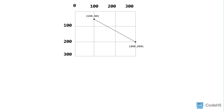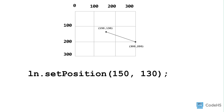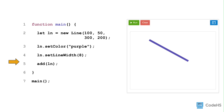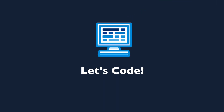Similar to changing the value of a text object, we can reposition a line later in the program as well. To adjust the starting point, you write the name of the variable, dot, setPosition, and between the parentheses, the x and y position. To adjust the endpoint, you write the name of the variable, dot, setEndpoint, and between the parentheses, write the x and y position. Lastly, add the line to the canvas by calling the add function and passing the variable between the parentheses. Let's explore some of these examples together in the editor.